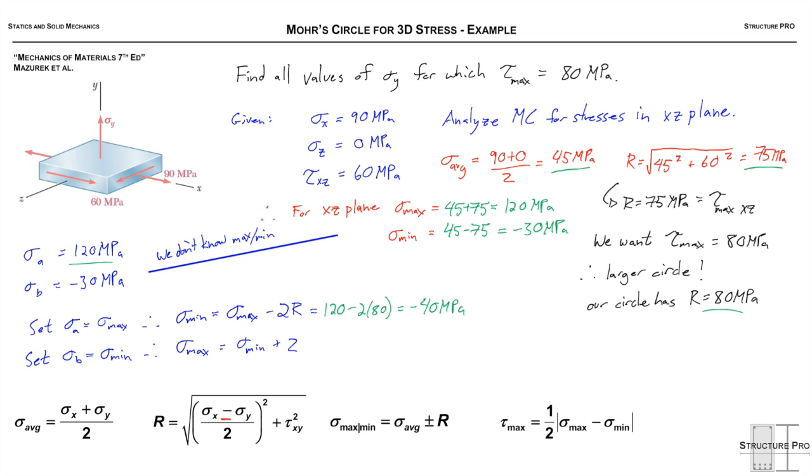You can do the same thing by setting Sigma B equal to Sigma min and then solve for Sigma max. So it's going to be our minimum plus 2 of our radius, or the diameter, and that equals our negative 30 plus 2 times 80, so negative 30 plus 160 is 130 MPa.